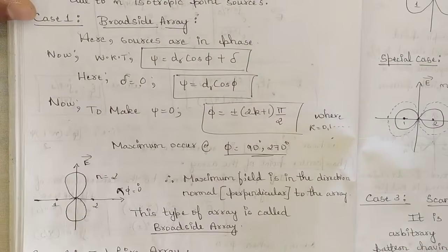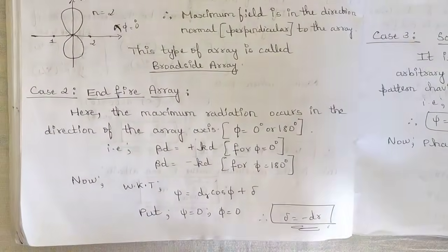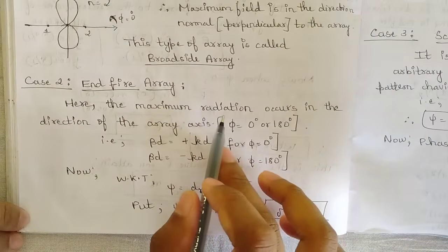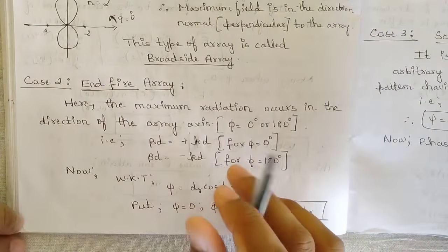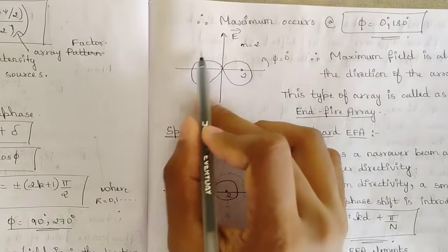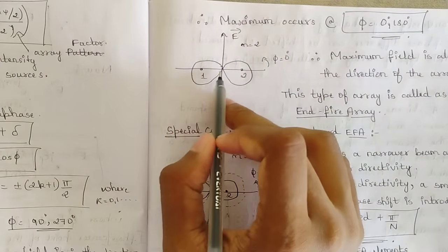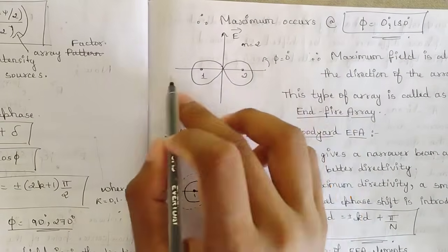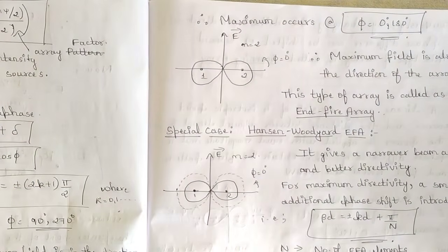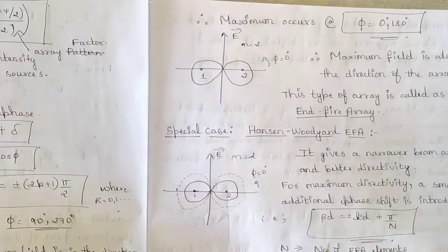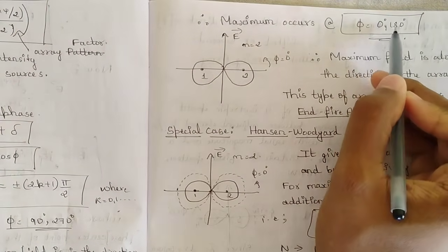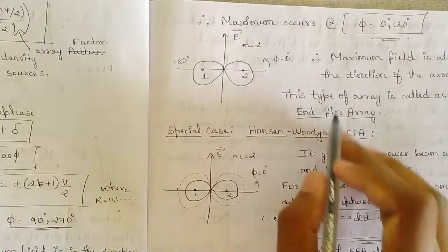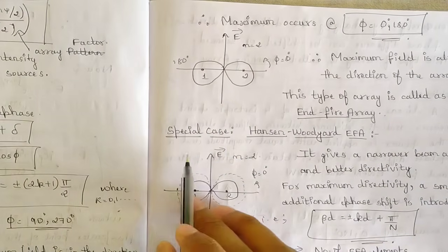The next kind is called the end fire array. Here the maximum radiation occurs in the direction of the array axis. The pattern extends along the array axis where n point sources are placed. In this case with n = 2, the maximum field occurs at angles of 0° and 180°. This type of array is called an end fire array.